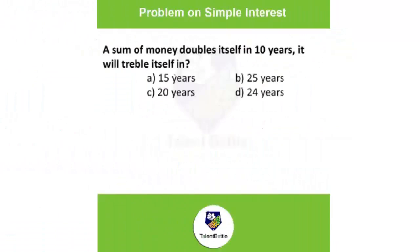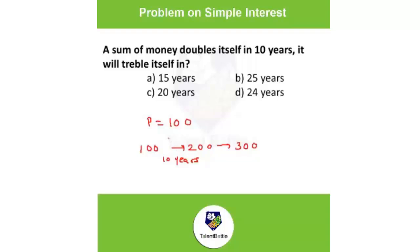Now a simple interest question: a sum of money doubles itself in 10 years; in how many years will it triple? Assume principal = ₹100. To double to ₹200 takes 10 years. Since simple interest increases uniformly each year, an increase of ₹100 takes 10 years. To increase by ₹200 (to become ₹300), it takes 20 years. Answer: 20 years.